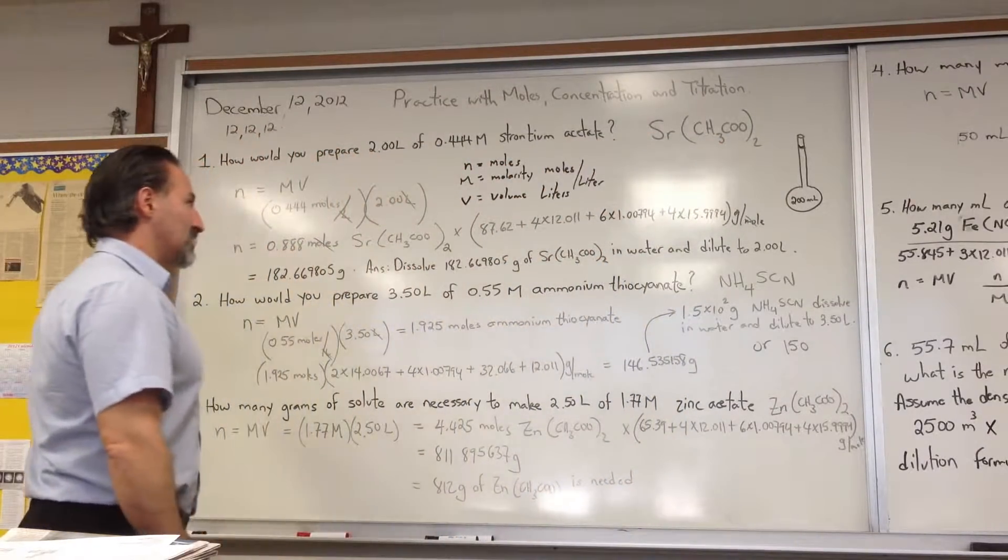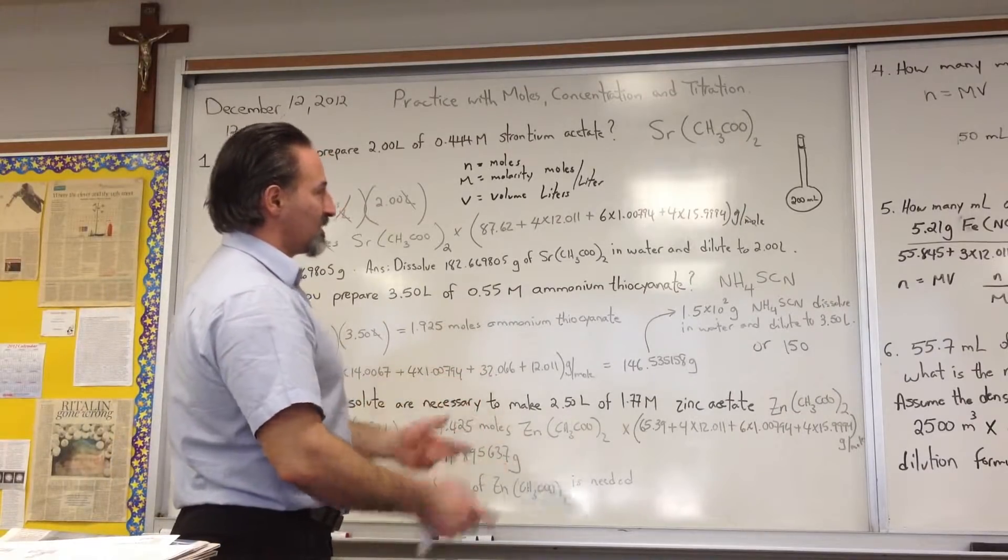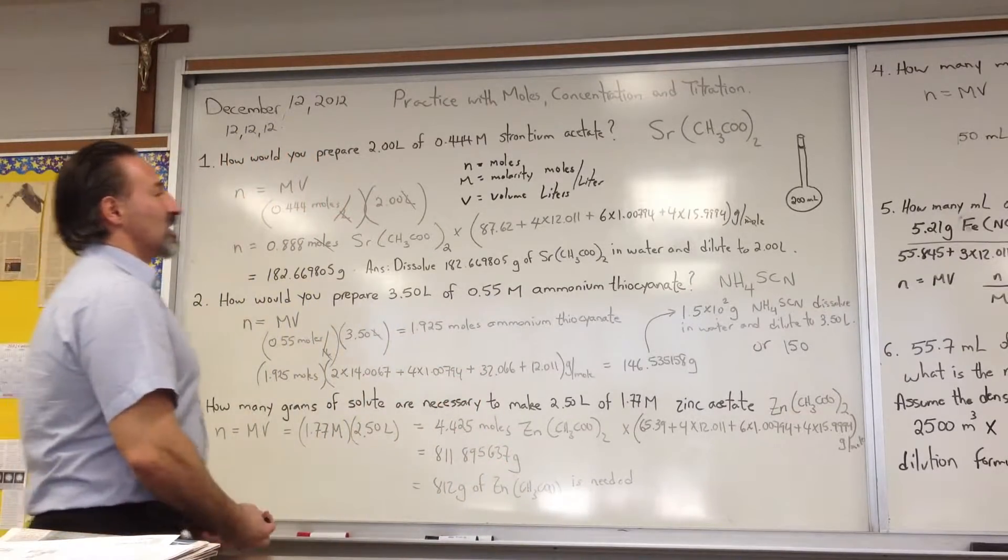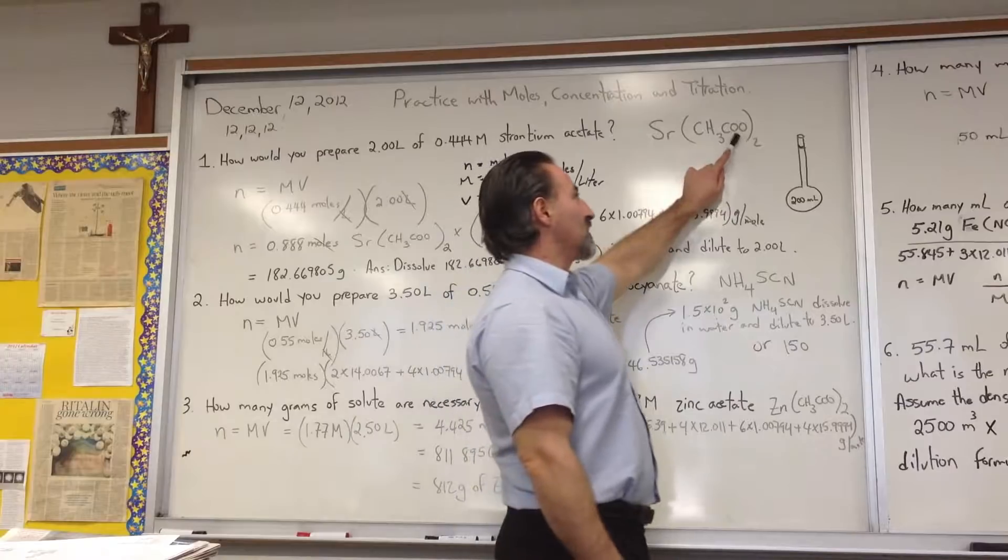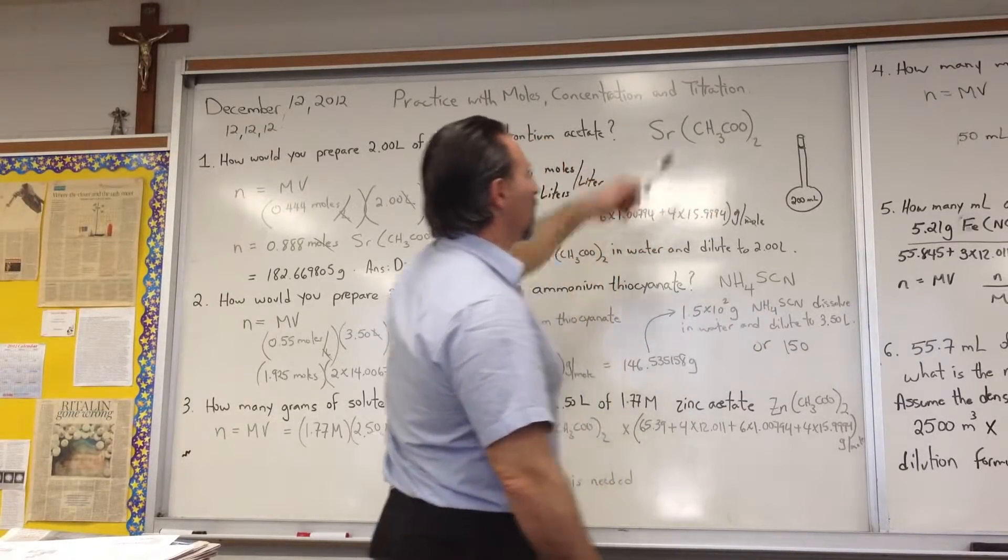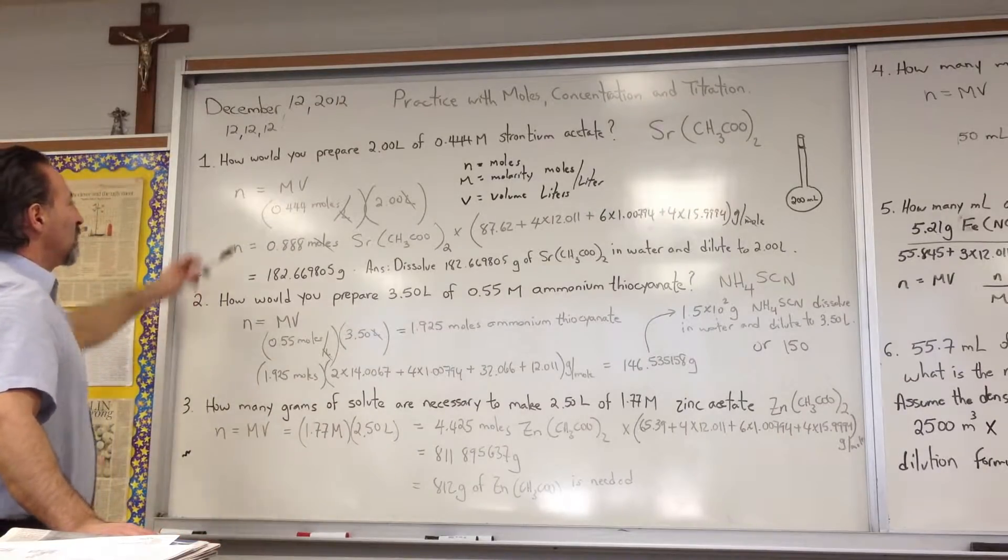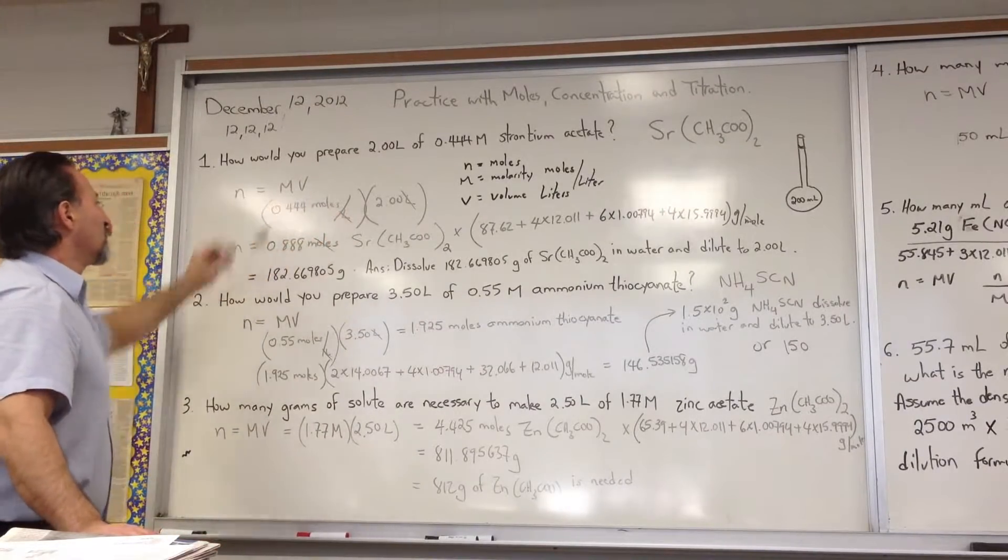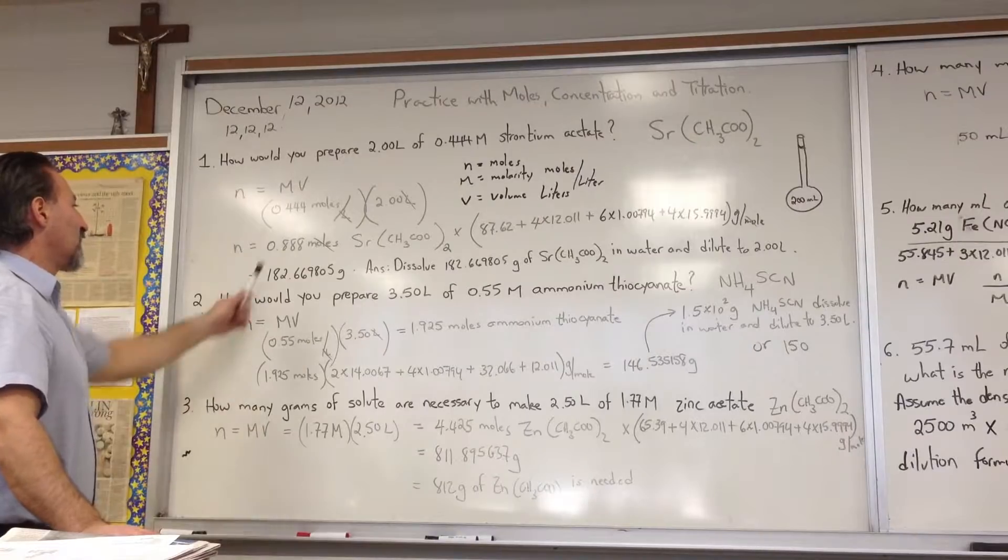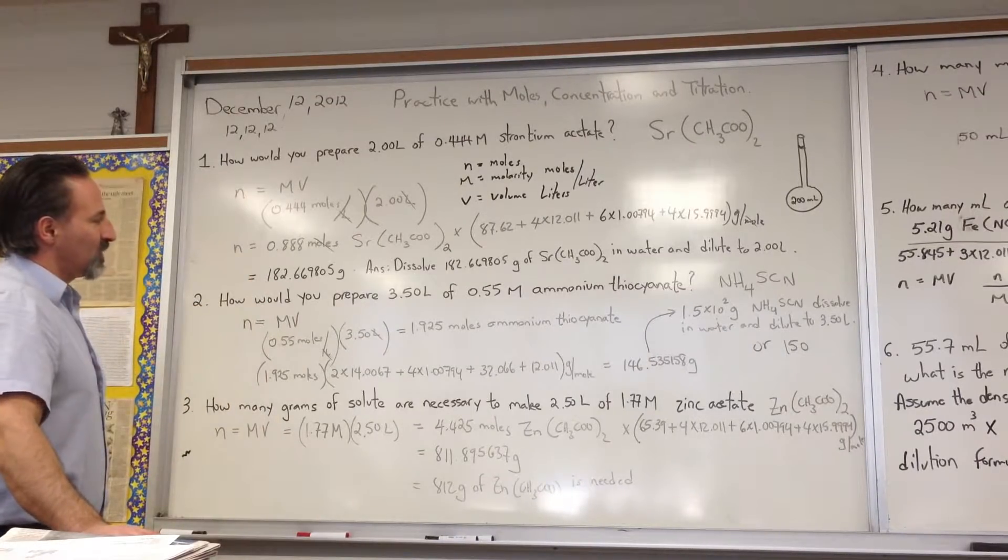And the acetate anion has a minus 1 charge, so you'll need two acetate ions to combine with strontium. So the formula for strontium acetate is Sr bracketed CH3COO, and it's not acetic acid, it's acetate, so the acetic acid missing its proton is the acetate anion, and there's two of them.